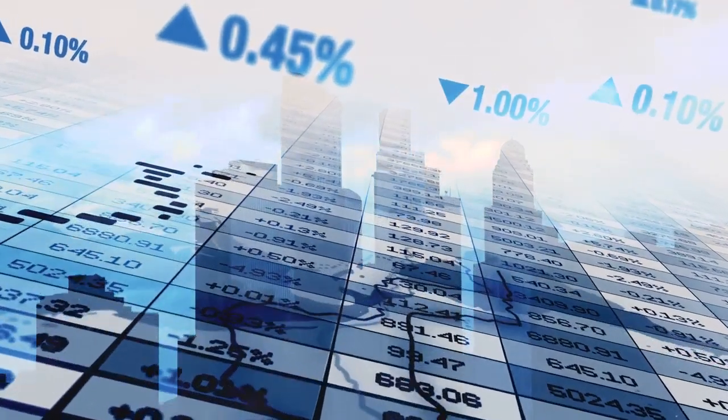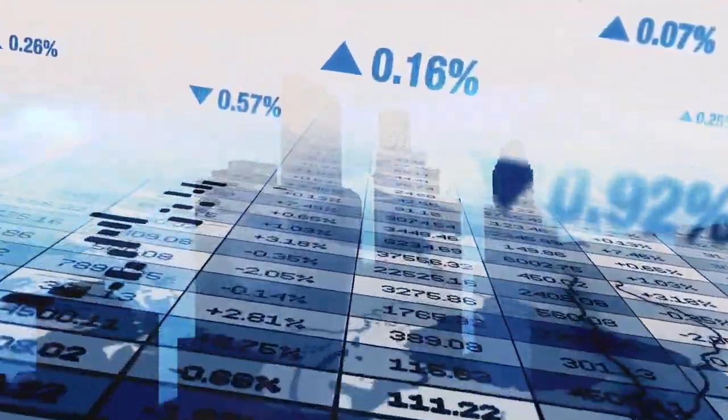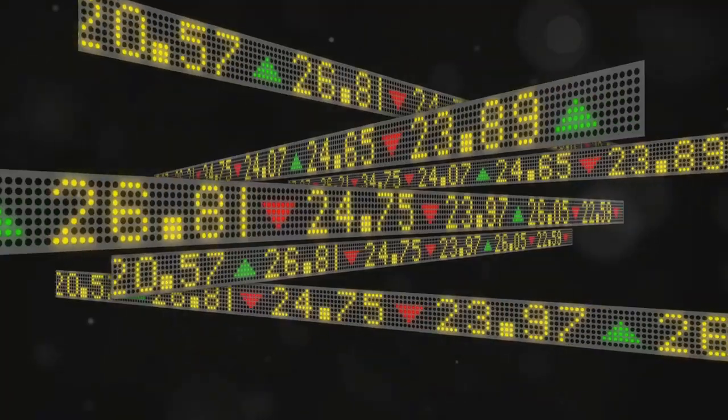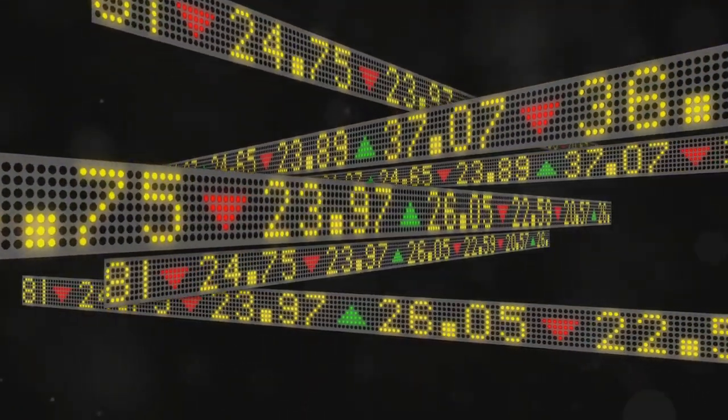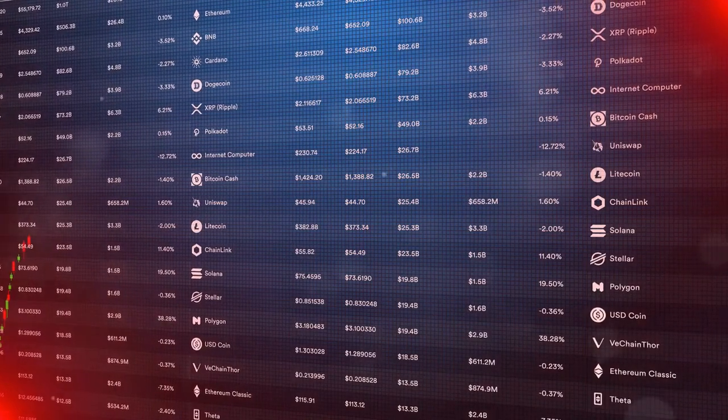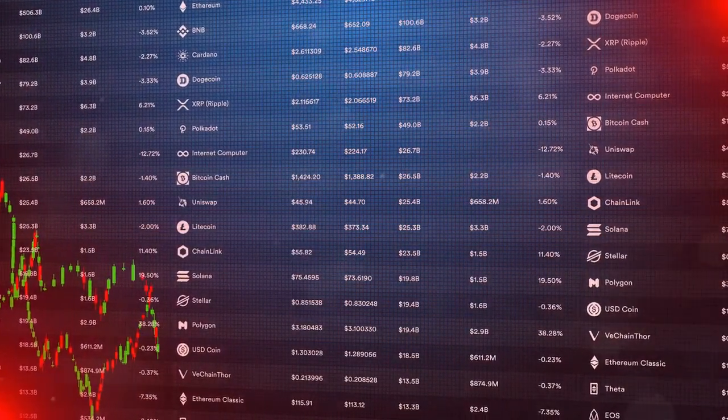Third, Bachelier demonstrated that the probability of a price change of a given magnitude decreases as the magnitude of the change increases. In simpler terms, small price fluctuations are more common than large ones. This principle has profound implications for understanding risk and volatility in financial markets.